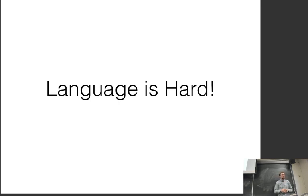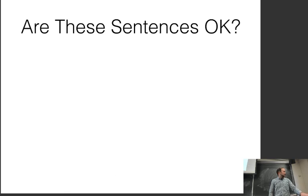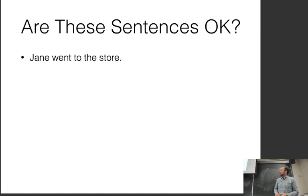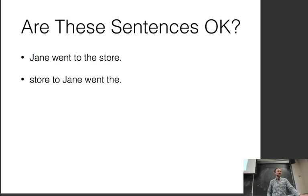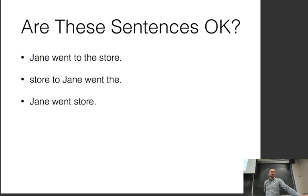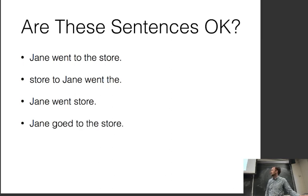The motivation for why you would want to use neural networks for natural language processing is because language is hard. I'd like to give a couple of examples of why this is hard, including distinguishing whether sentences are grammatical or not. For sentence number one — is this grammatical? Yes. Number two? No. Why is that? The words are in the wrong order. What about this one? Missing words — it has no determiners, which is fine in Chinese or Russian, but not in English. So this is wrong.